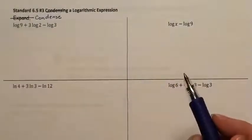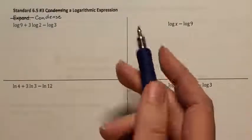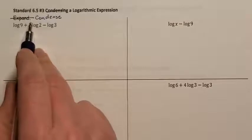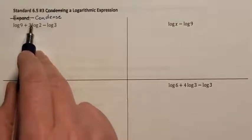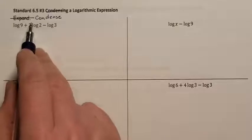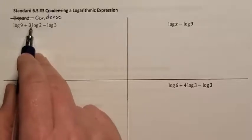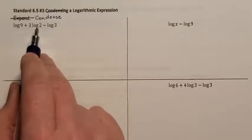First I see that there is a 3 in front of this log. I know that if there's a 3 in front of the log, this 3 was an exponent. So I'm going to rewrite this 3 as the exponent.